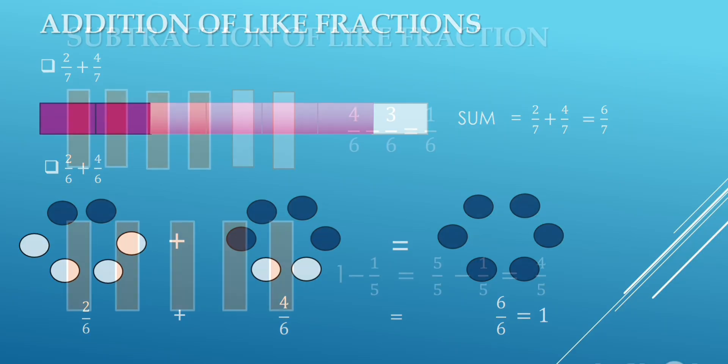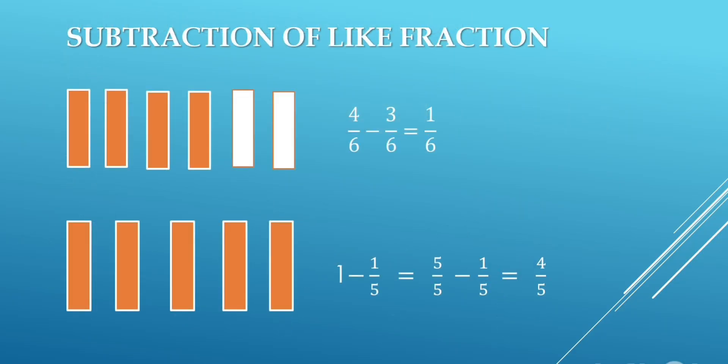Now, subtraction of like fractions. The first question is 4 upon 6 minus 3 upon 6. Total parts are 6, and the fraction of shaded parts is 4 upon 6. To subtract 3 upon 6, we will cut 3 shaded parts. Now one shaded part is left, so the answer is 1 upon 6.